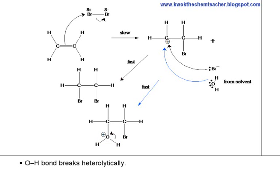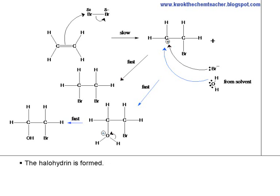Oxygen-hydrogen single bond breaks heterolytically. The OH bond electrons are given to the oxygen atom. The halohydrin is formed.